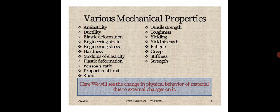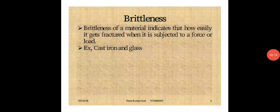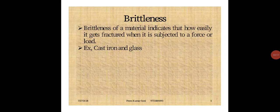First one is Brittleness. Brittleness is the property of a material by means of which it will fracture without any appreciable deformation — there is no elongation that takes place in the material. It will crack suddenly when the load is applied. This type of property is called a brittleness property. Examples are cast iron and glass. This property is undesirable in machine parts which may be subjected to certain loads.